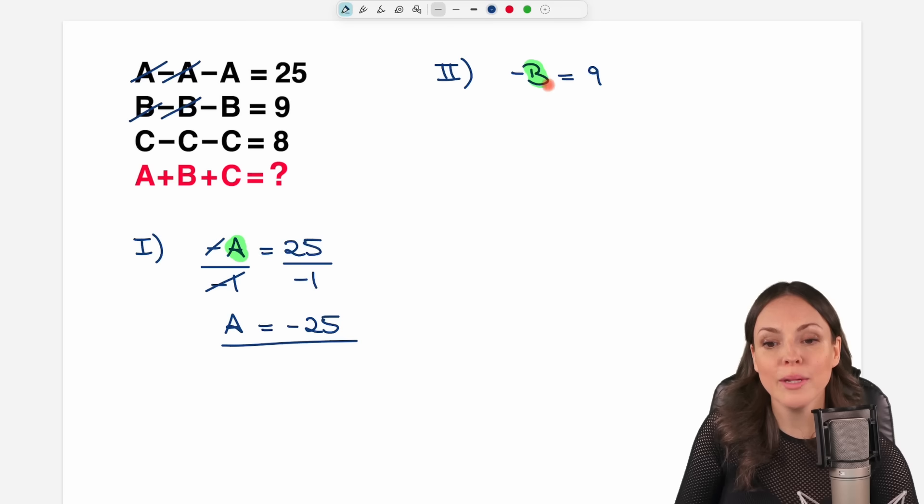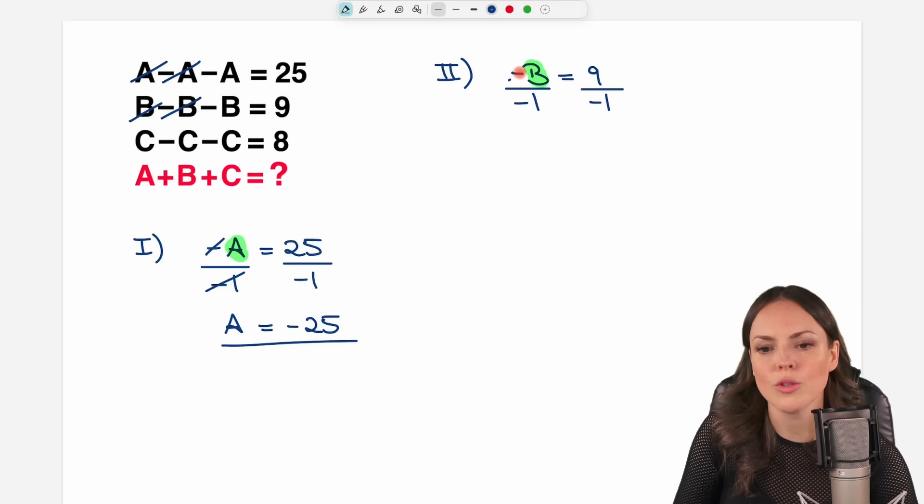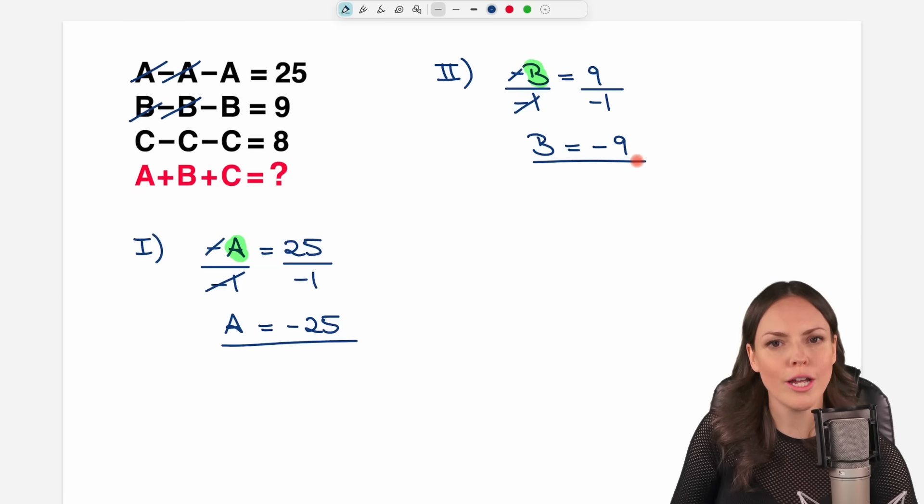Let's solve for B by dividing both sides of the equation by negative 1. So that this cancels out. Only my B is left and 9 over negative 1 equals negative 9.